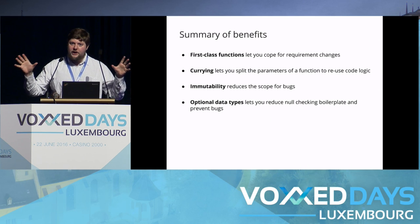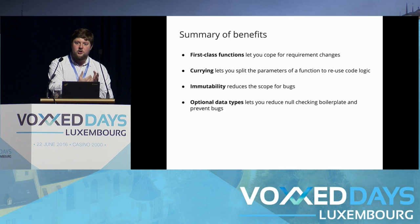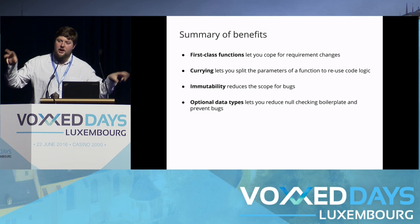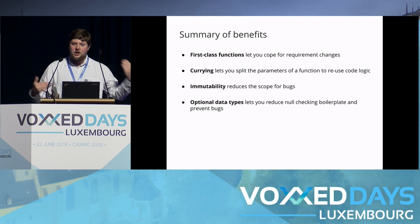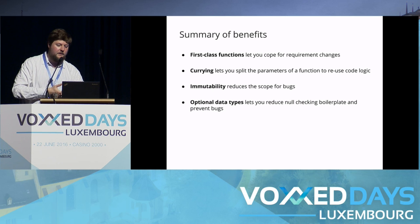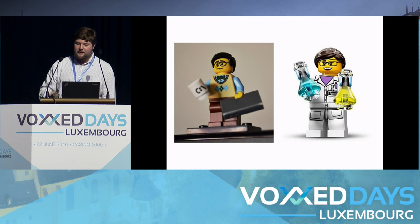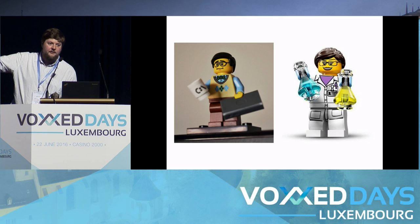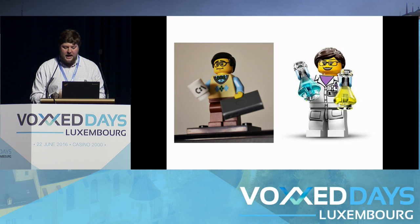Let's draw a few conclusions. We talked about four key things: first-class functions that let us cope with requirement changes by parameterizing by behavior rather than value; currying for reusing core pieces of business logic; immutability to reduce the scope for bugs — instead of train journeys looping back on themselves we solved a whole class of bugs at once; and the optional data type to reduce the scope for null pointer exceptions. The bigger takeaway is that while some of these functional ideas come from an academic background, they can make our programs more reliable, make us more productive, and reduce maintenance overhead.